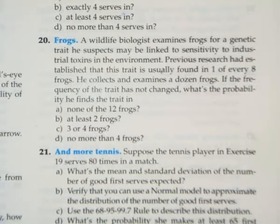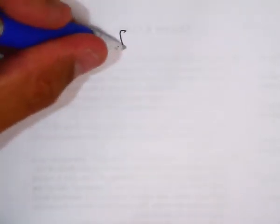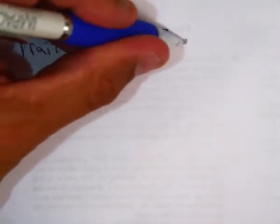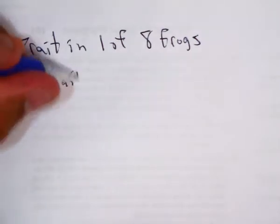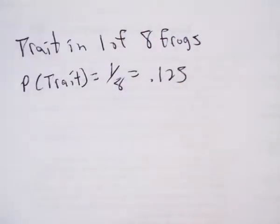Okay, so here's what we got. We got this trait in one of eight frogs. So that means the probability of the trait equals one in eight, which is 0.125.